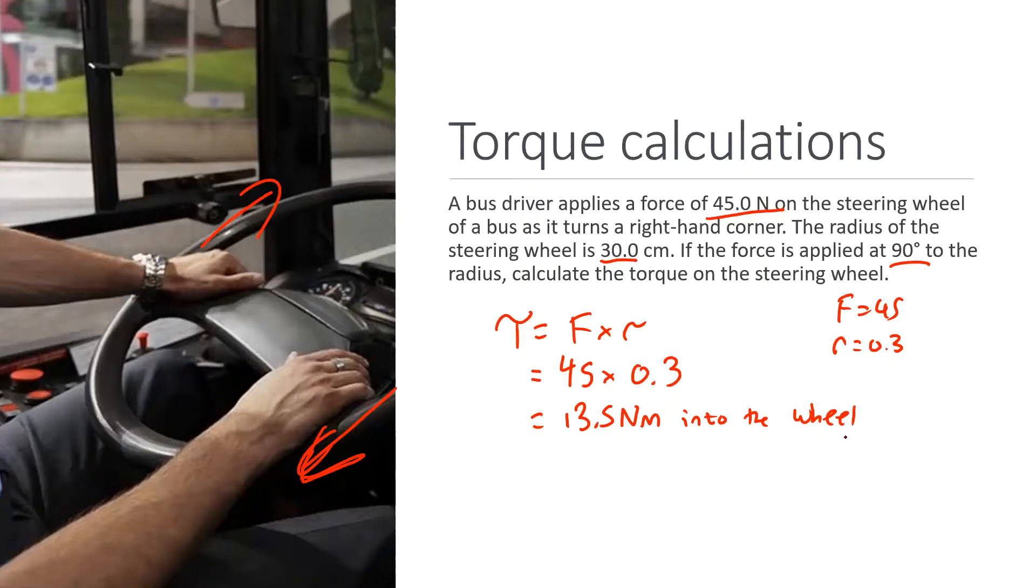13.5 Newton meters into the wheel. Some people would just say you can just write positive, or positive 13.5. Both of those would be fine.